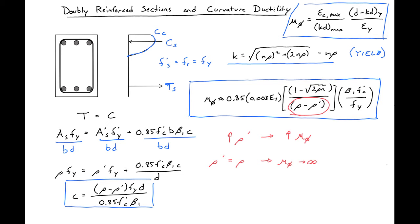So note that this is not valid because of our one assumption. Because we assumed that our FS prime will yield. And at higher compression reinforcement ratios, this will not be the case.